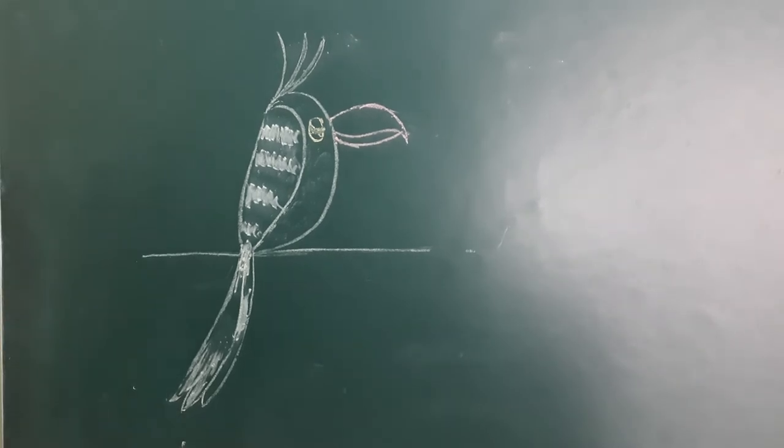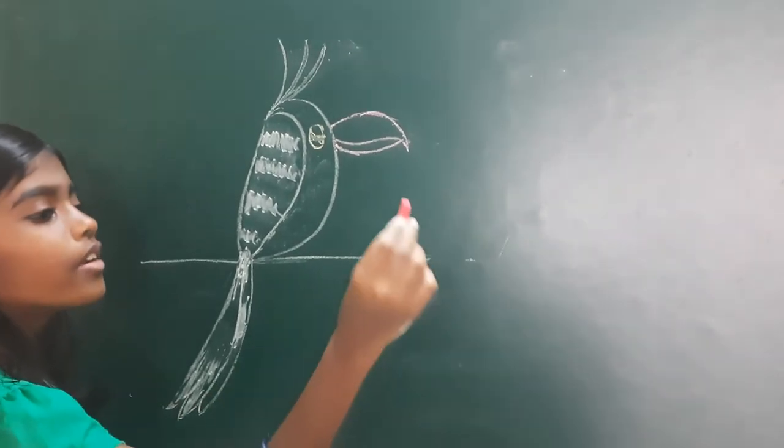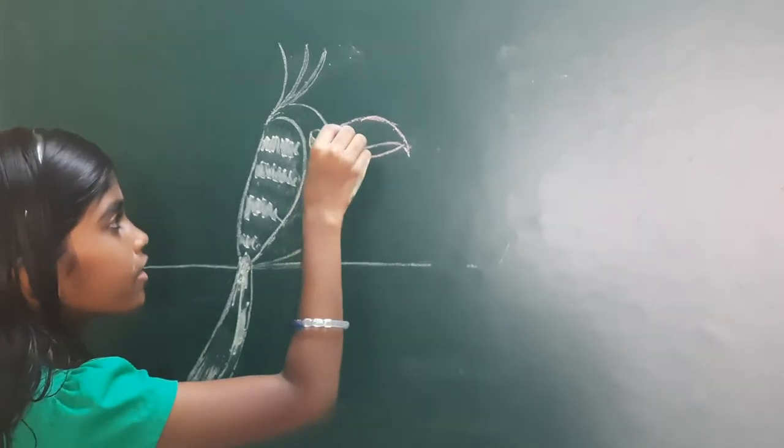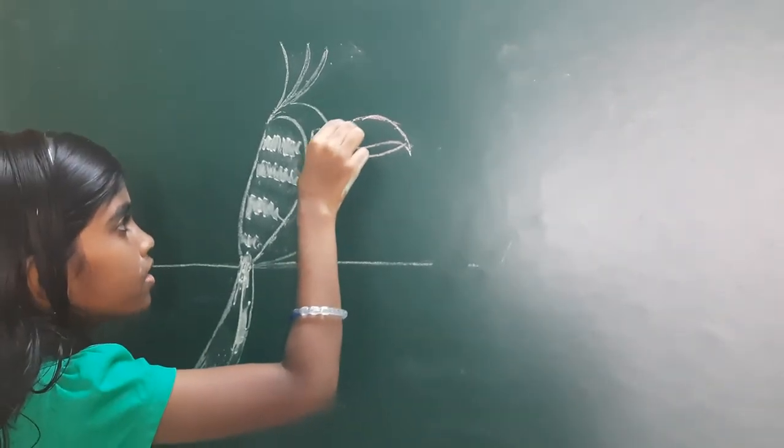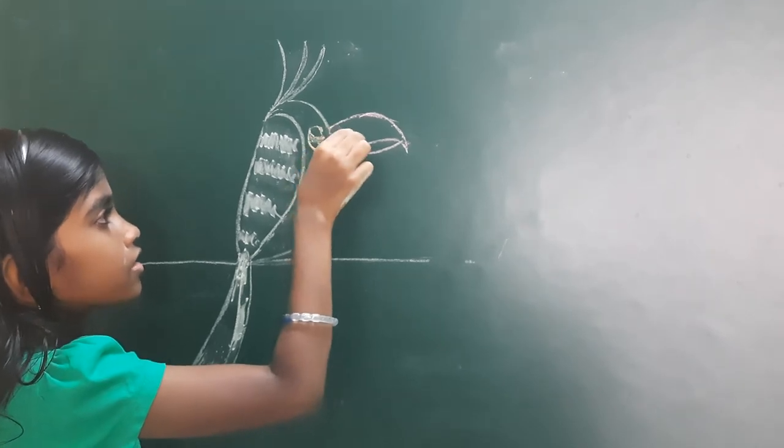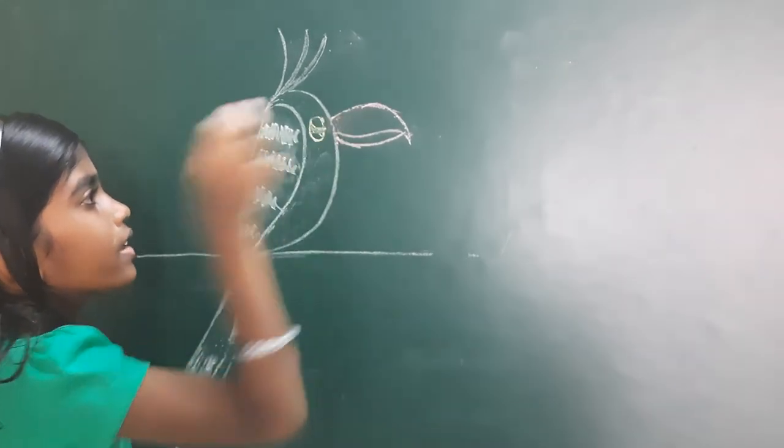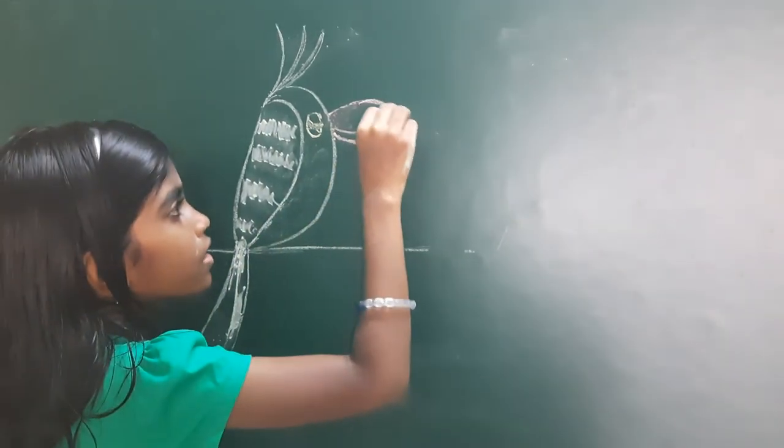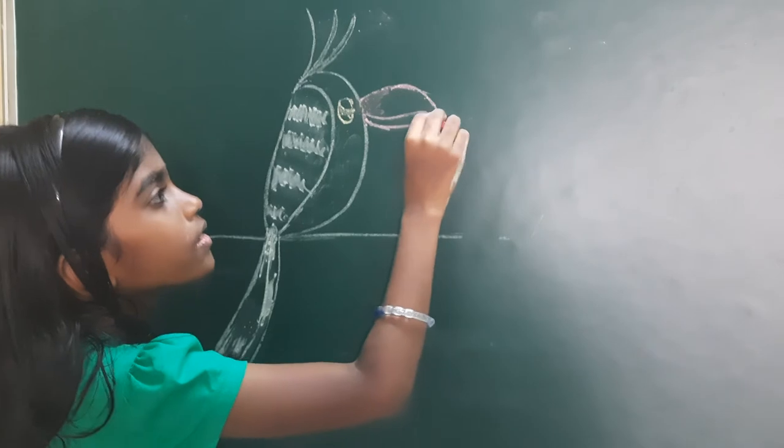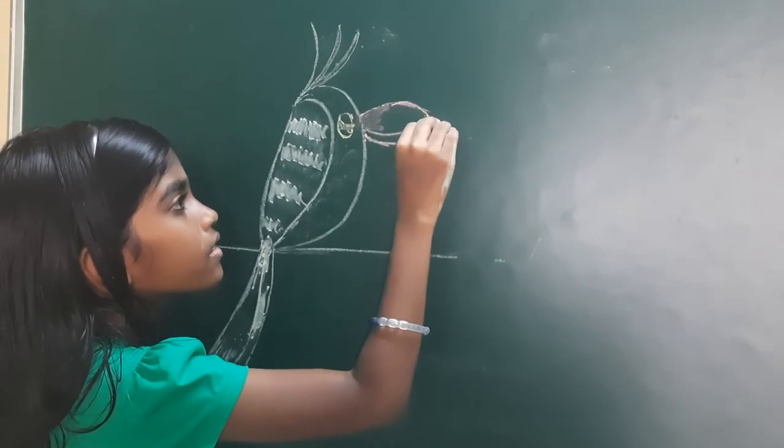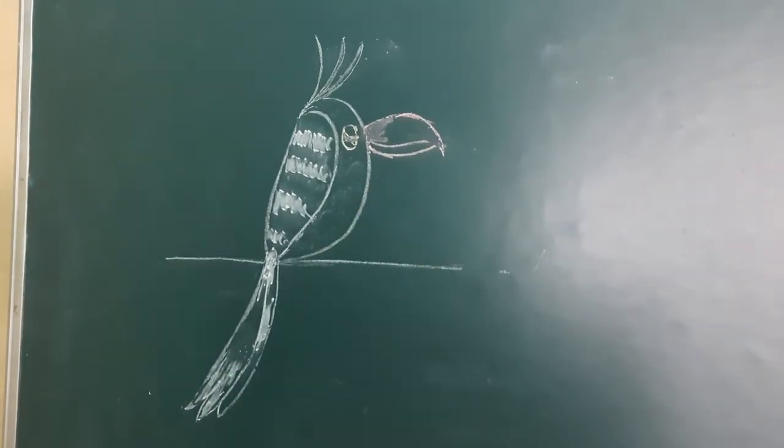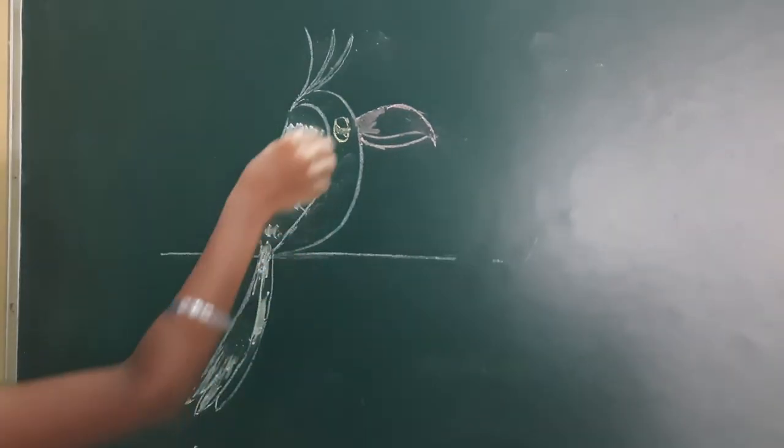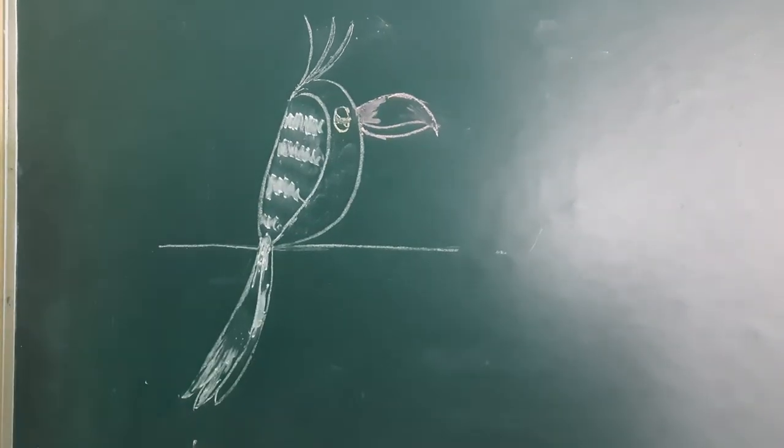And this should be wet too. Now you will do the beak, which is simple. Like this. I don't know if you will see, but you will look in there. Now this is a bit tricky. You have to make a line just like that. You want to leave some space in the middle.